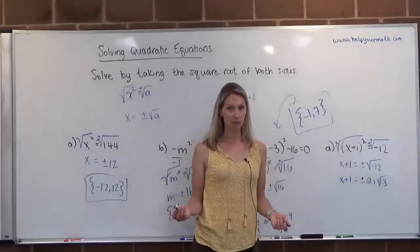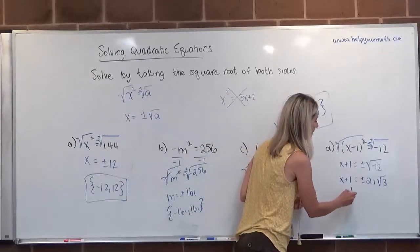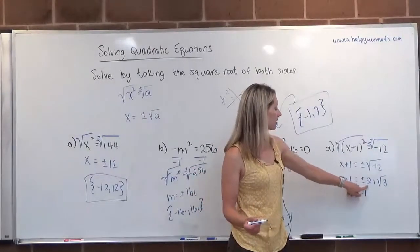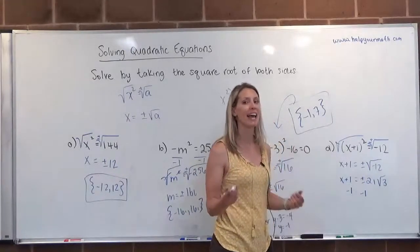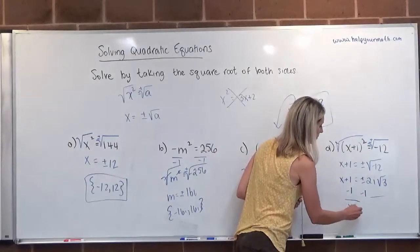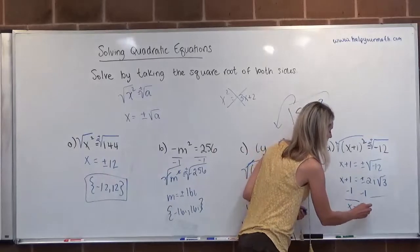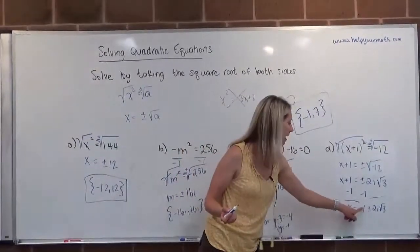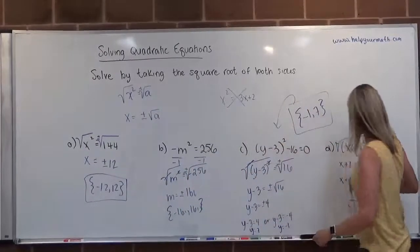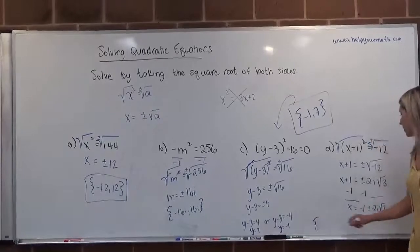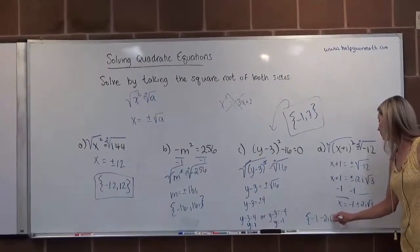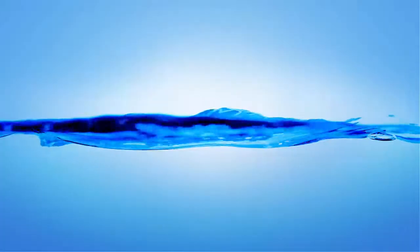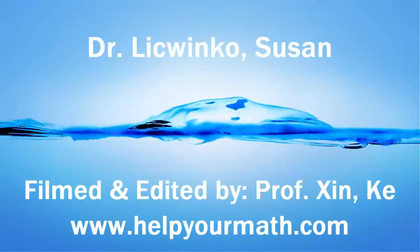To solve for x and get it by itself, I subtract 1 from both sides. Notice that on the right-hand side, negative 1 is a real integer while the other term is imaginary with a radical — so for a lot of reasons we cannot combine those two terms. We write x equals negative 1 plus or minus 2i radical 3, putting the real part first. Our two solutions are: negative 1 minus 2i root 3, and negative 1 plus 2i root 3.